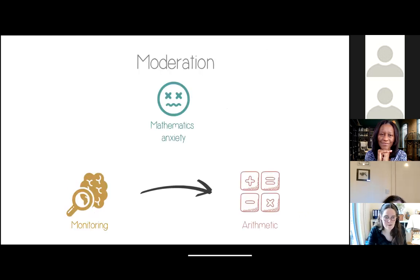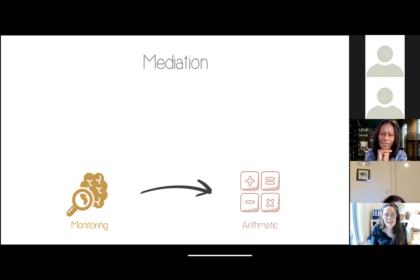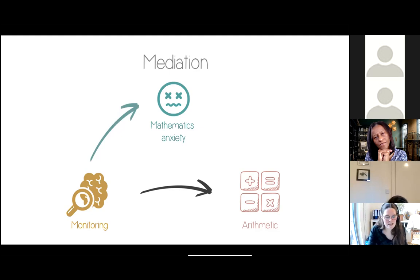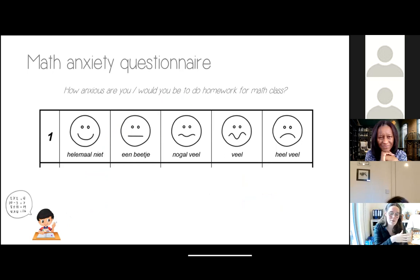We tested the following models: a moderation model — is the association between monitoring and arithmetic different for math-anxious versus non-math-anxious children? And a mediation model — is the relation between monitoring and arithmetic based on their common relation with mathematics anxiety? To measure math anxiety, children were given a questionnaire of 15 situations involving math, and had to indicate how anxious they would feel, ranging from 'not anxious at all' to 'very, very anxious.' The participants were second graders followed up in third grade, all typically developing from Flanders in Belgium, middle to high socioeconomic status.